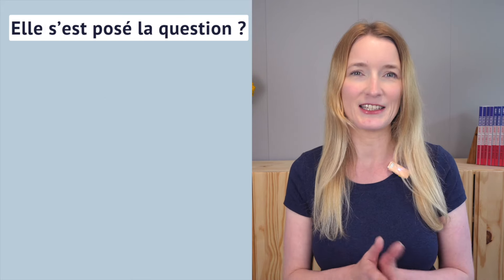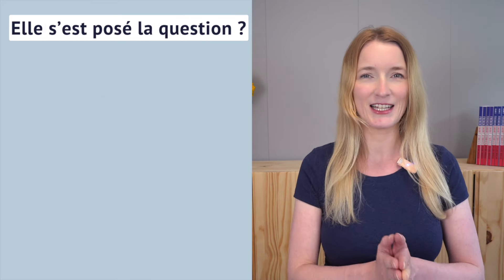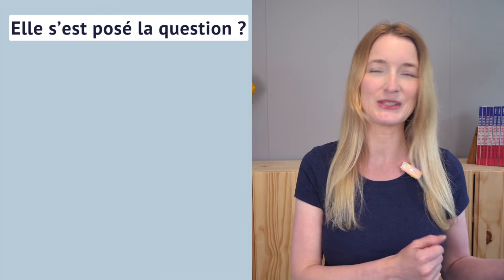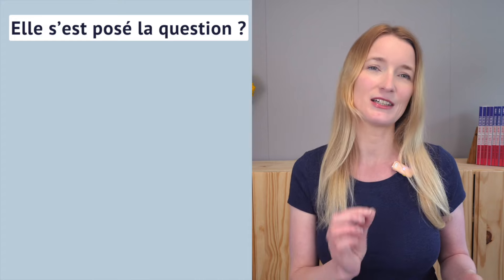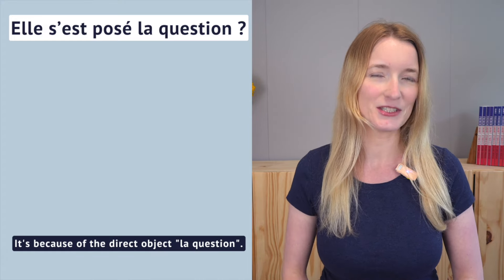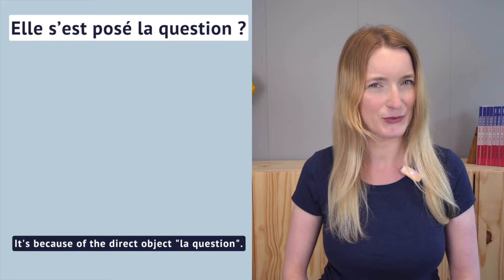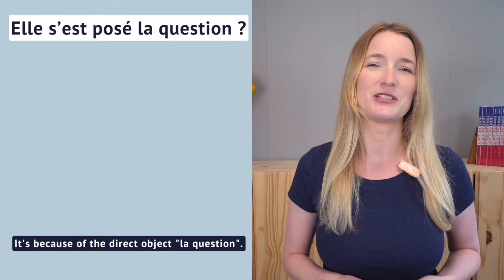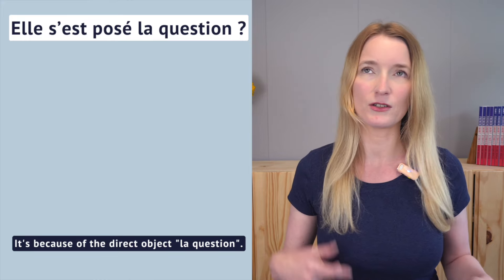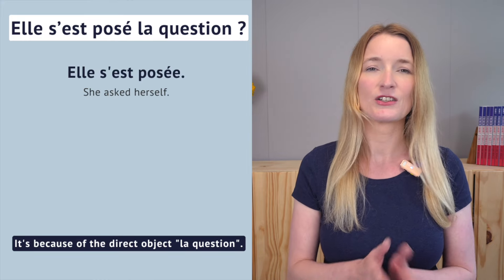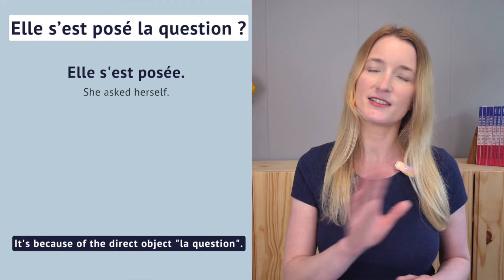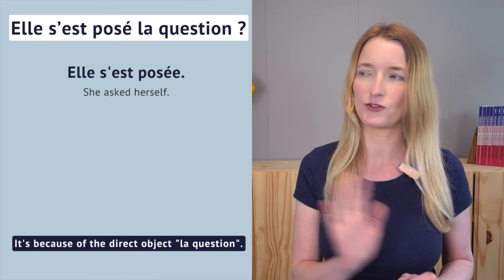Now why was the answer in the test 'elle s'est posé la question' without an E at 'posé'? It's because of the direct object, which is 'la question'. We find a direct object by asking the question 'quoi' or 'qui' — what or who. So 'elle s'est posé' — if we just had that part of the sentence, we would have the E at the end.